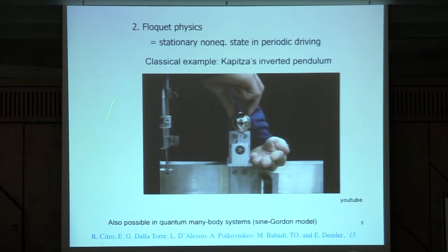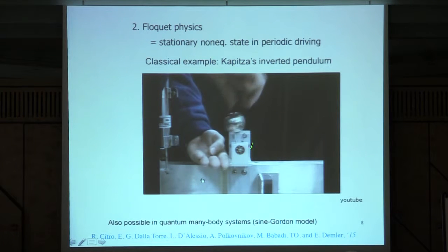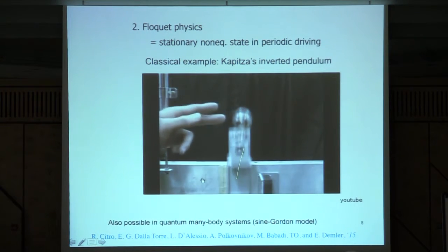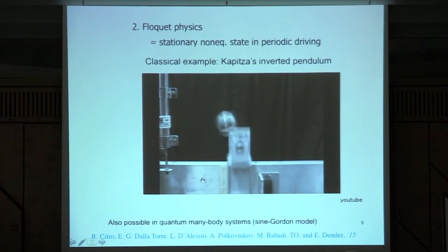The second example is the Floquet physics. If you have a system, and if you periodically drive the system, there are many interesting phenomena. There's one classical example for this, and that's the Kapitsa's inverted pendulum. I got this downloaded from YouTube. This is a movie. Of course, the pendulum, the stable point is down here. But if you shake it like this, there will be another stable point up there. You can see that if you give a small perturbation, it comes back. So, this is really a stable point.